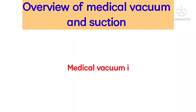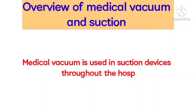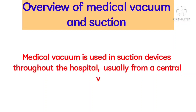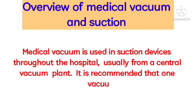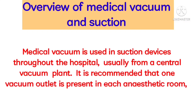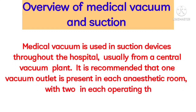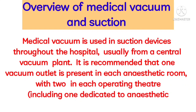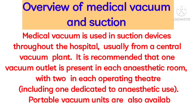Medical vacuum is used in suction devices throughout the hospital, usually from a central vacuum plant. It is recommended that one vacuum outlet is present in each anesthetic room, with two in each operating theater, including one dedicated to anesthetic use. Portable vacuum units are also available.